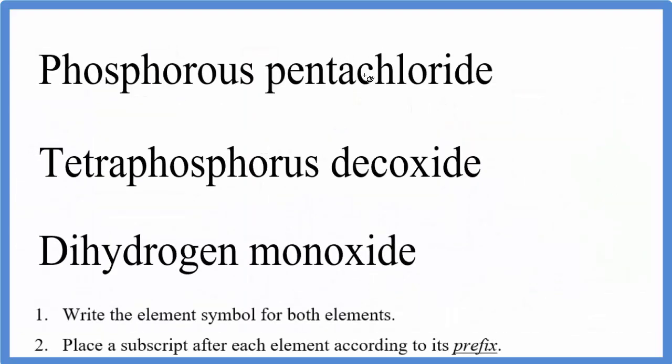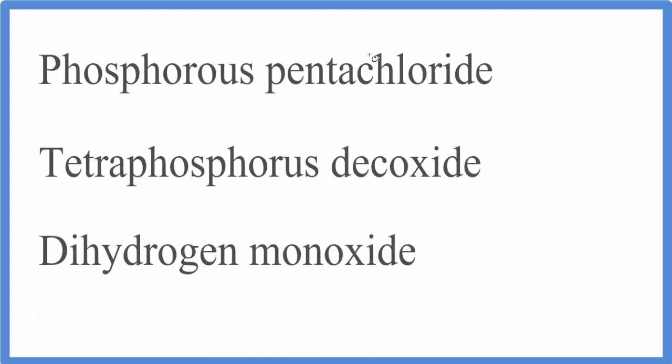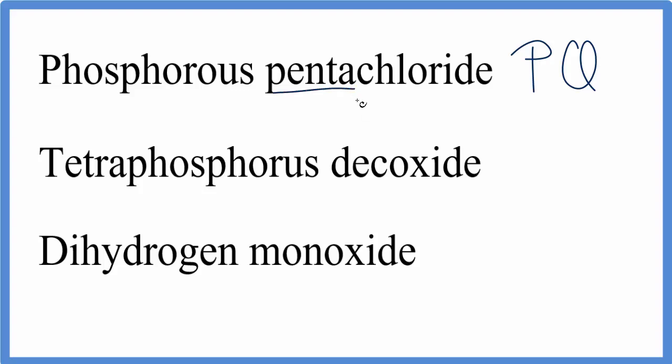So pause and give these a try. For phosphorus pentachloride, we have the one phosphorus, we write our P. Chloride, that's chlorine, so we put a Cl, and we have penta, like a pentagon, five sides. We have five chlorine atoms. PCl5, that's the formula for phosphorus pentachloride.